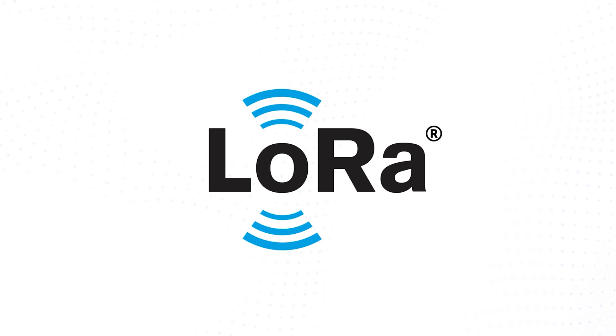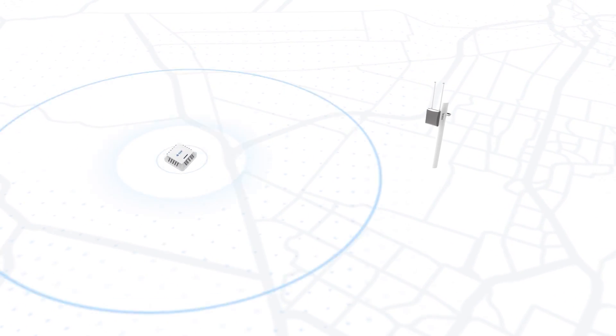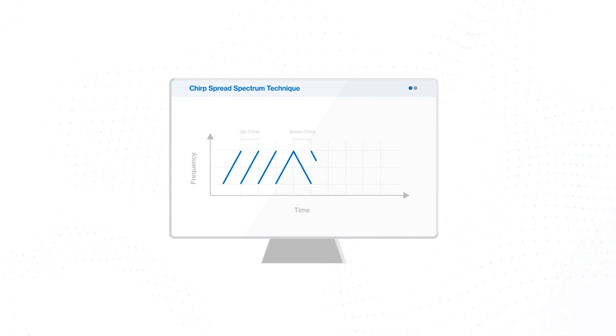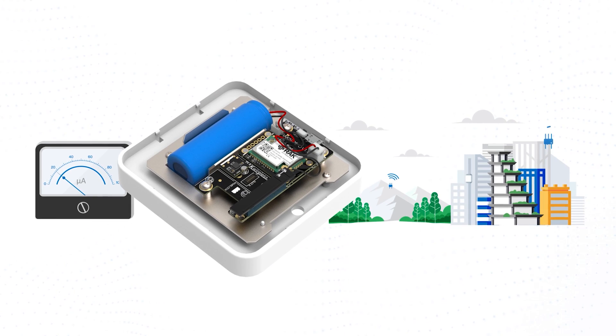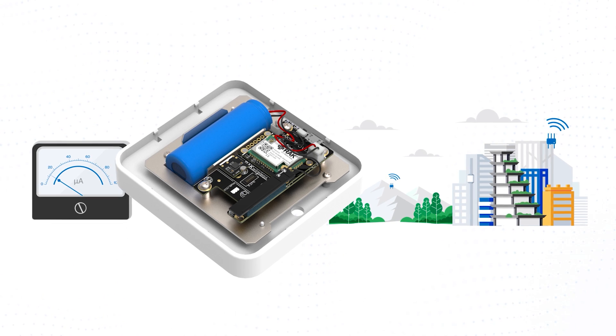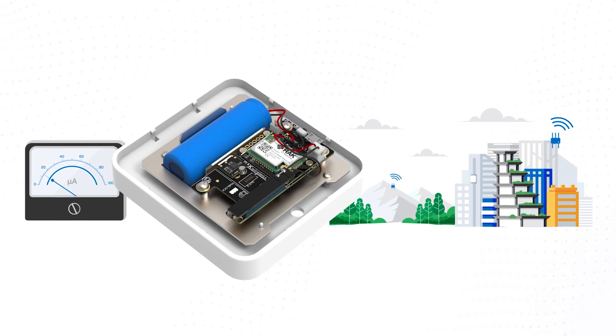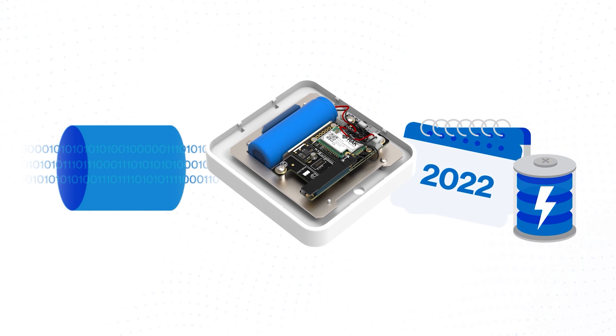LoRaWAN gateways are the access points to the LoRaWAN network for your end devices. As I mentioned many different terms, let's go into them one by one. First, we need to know that LoRa is the radio modulation technique used to create the long-range communication link. It's based on the Chirp Spread Spectrum modulation technology developed by Semtech. What makes LoRa interesting is its very low energy consumption and its broad coverage range, which is perfect for low data bandwidth solutions that also need a long-lasting operation time on batteries.